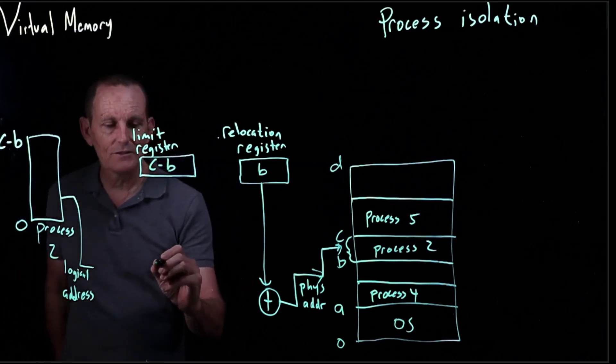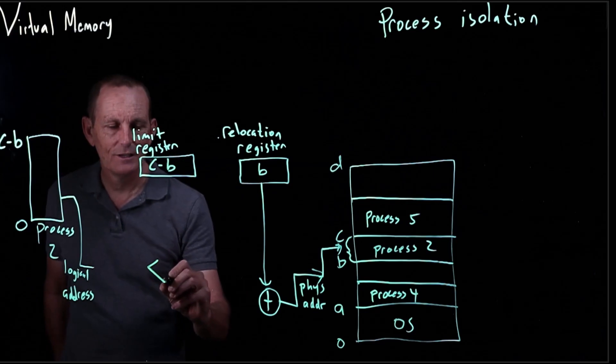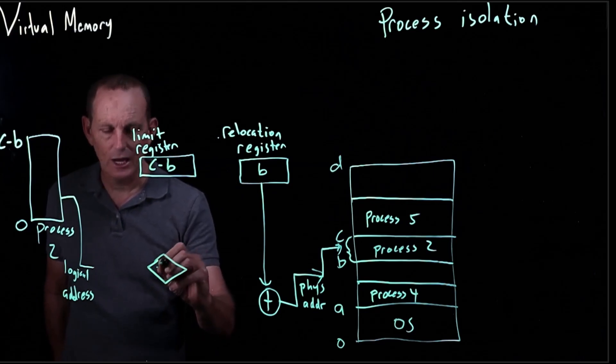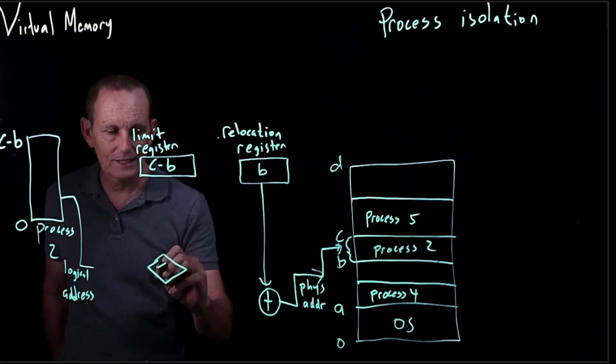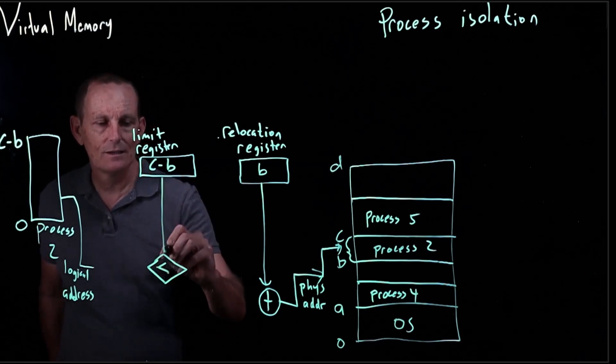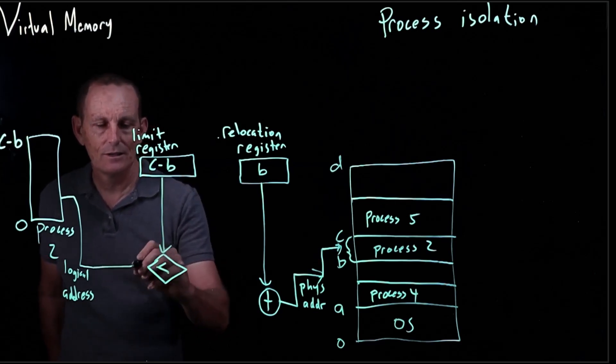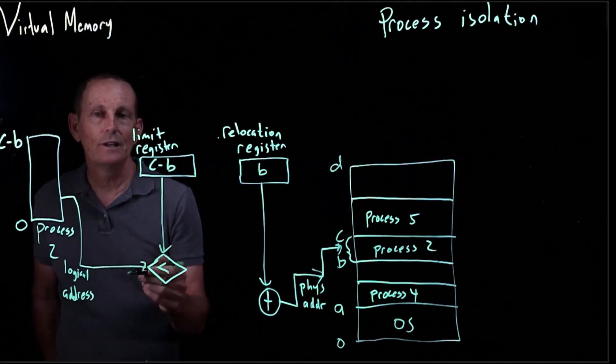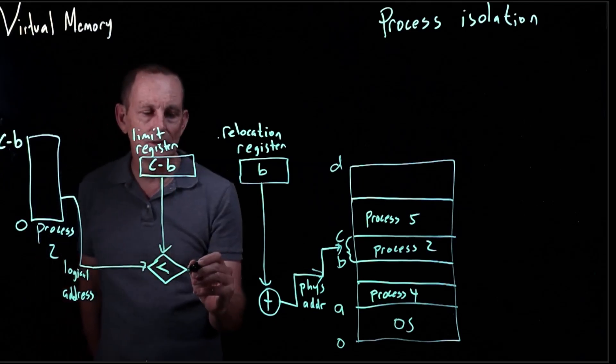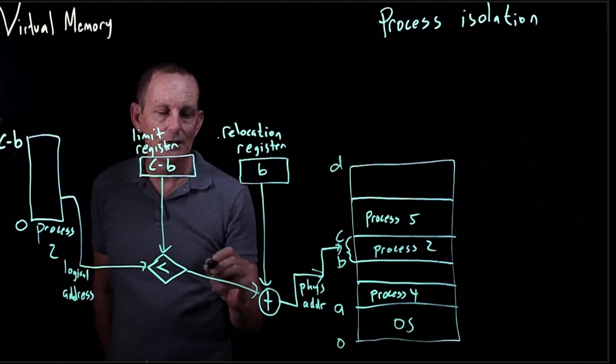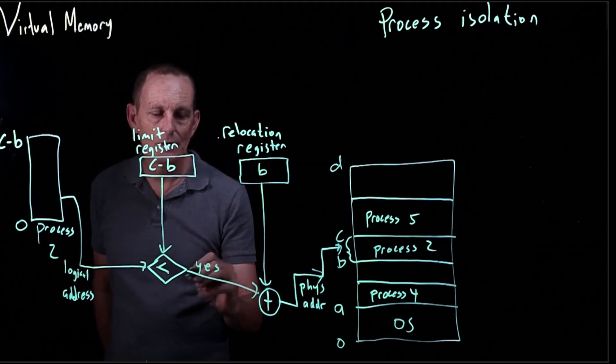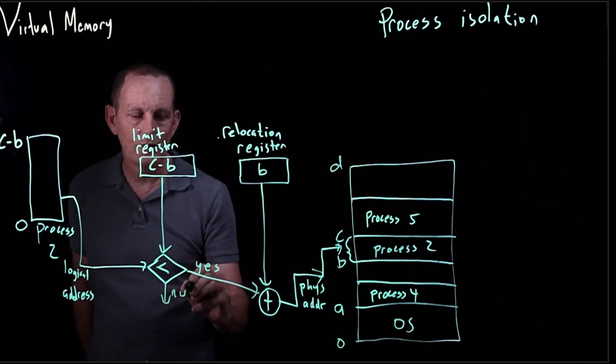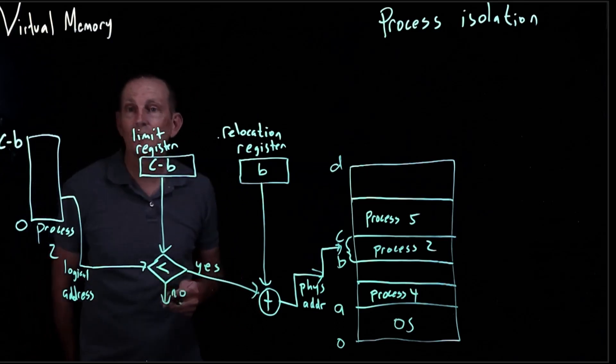And we'll have some sort of a check. We're checking whether it's less than. So the logical address comes in here. If it's less than C minus B, then we feed it along here. And if it's no, then we're going to figure out something else to do.